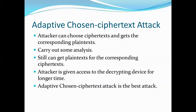The adaptively chosen ciphertext attack is the same as the chosen ciphertext attack, but the attacker can switch between getting pairs, doing analysis, and requesting the decryption device again repeatedly for a longer period of time. He has access to the decryption device for an extended period before being given the target ciphertext. The adaptively chosen ciphertext attack is considered the strongest of all six attack types we have seen.